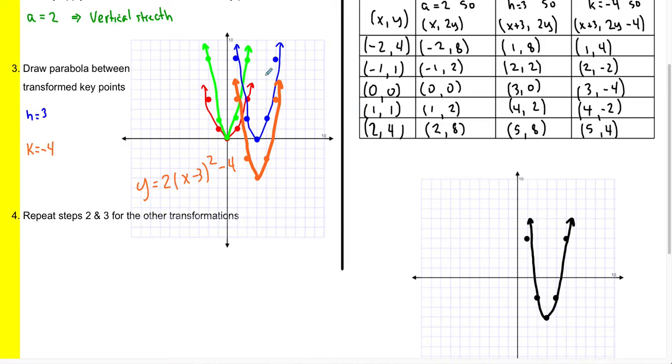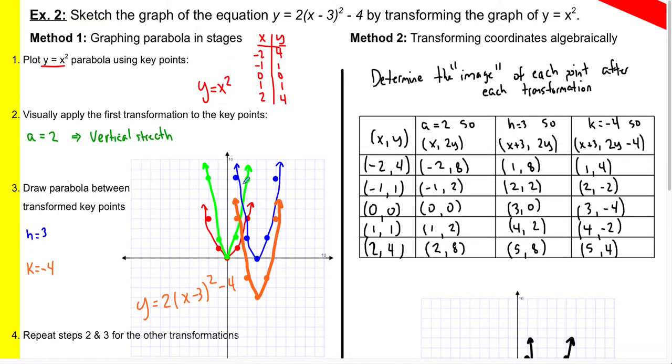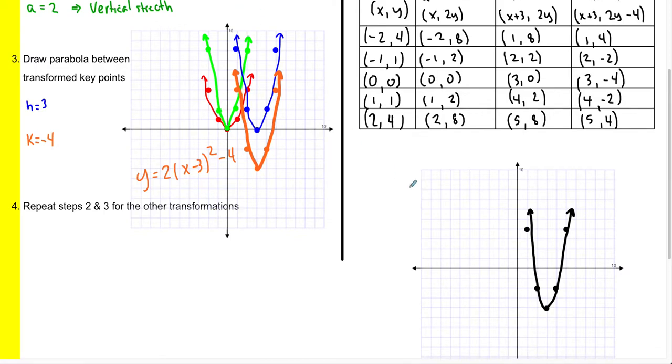As always, you should label your graph with the equation of your parabola. So in this case, once again, it's the same thing, y equals 2(x - 3)² - 4.